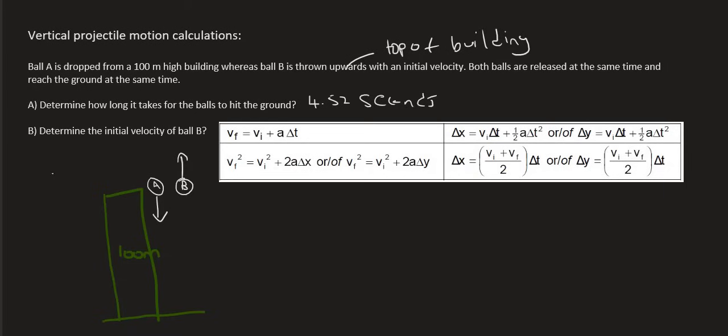And so we have X for ball B. We've got X and we've always got a. So that's nice, we've got a.